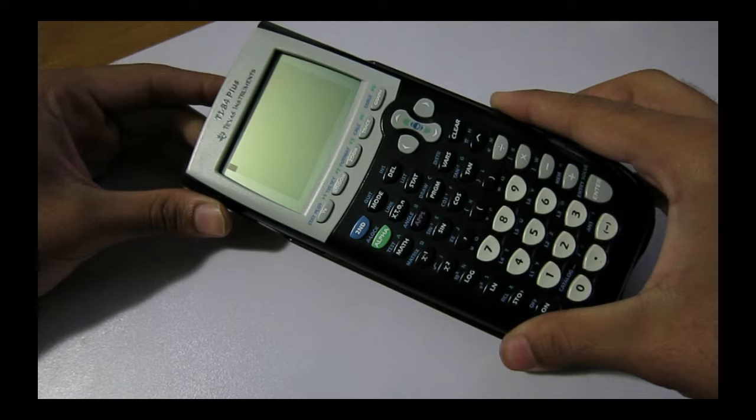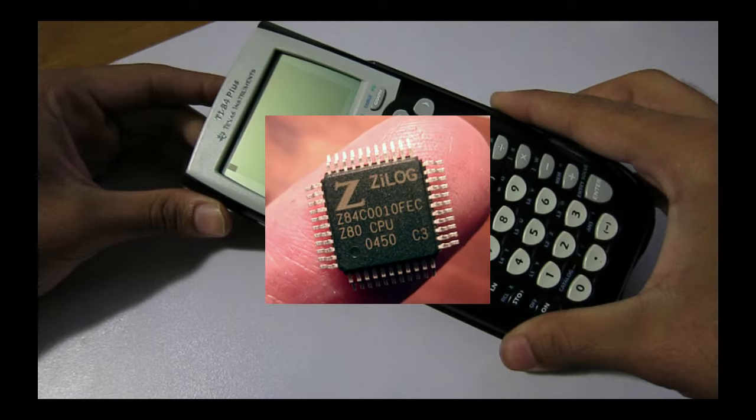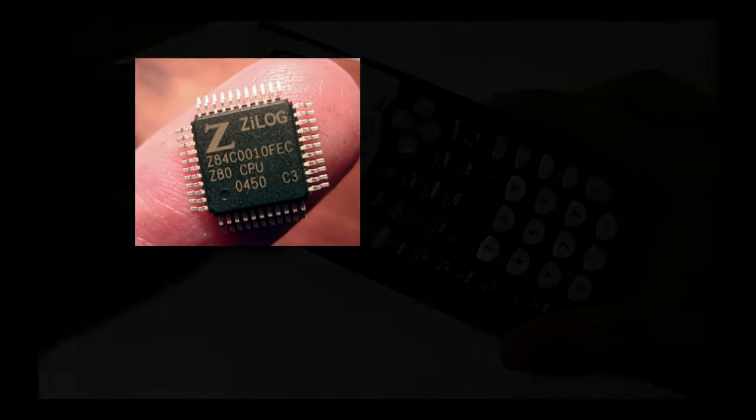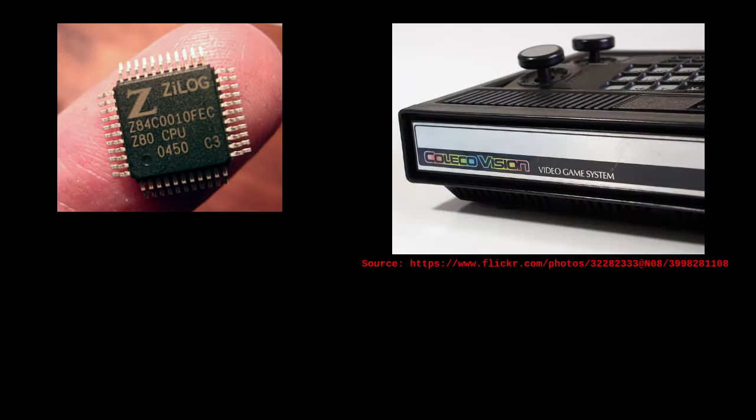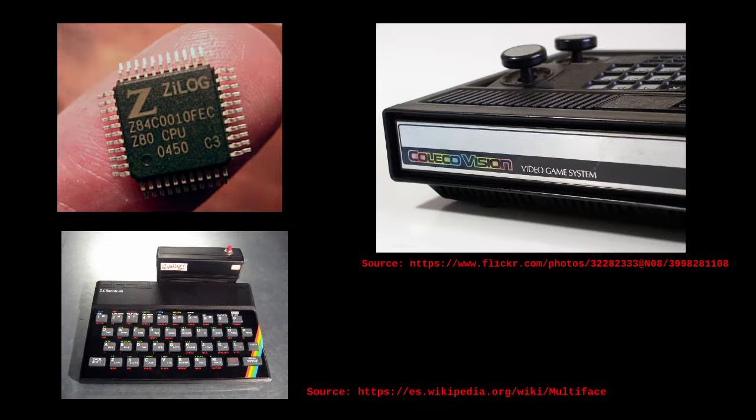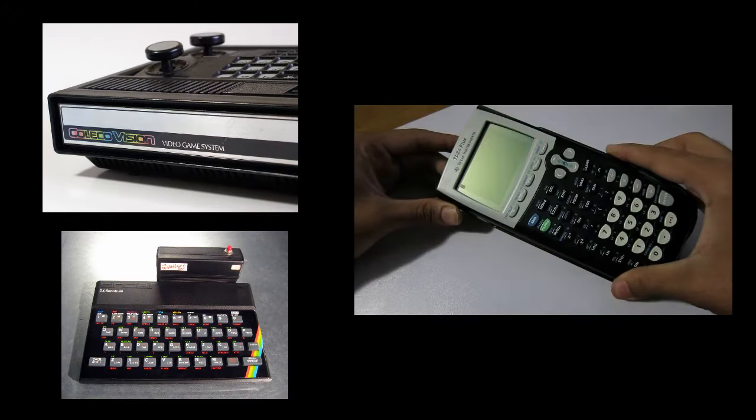The TI-84 Plus uses a CPU called the Z-Log Z80. And for reference, that same CPU was used in the ColecoVision game console and the Sinclair ZX Spectrum. The big difference though is that the TI is just meant to be a calculator.